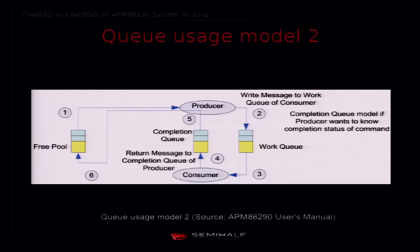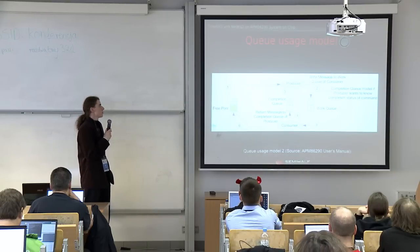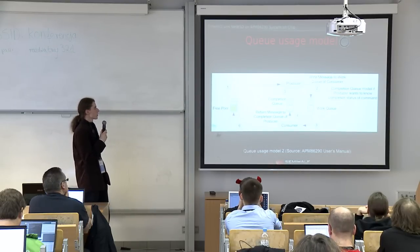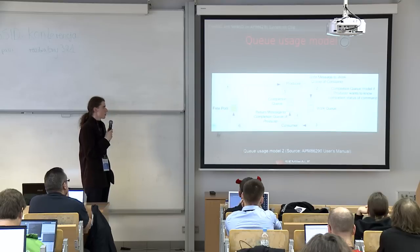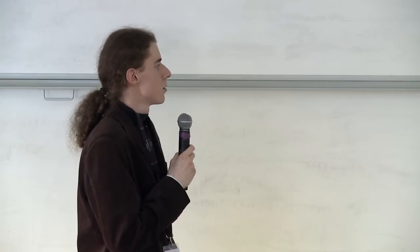The second model has an additional completion queue. The start is practically the same, but the only difference is that the consumer returns a message to the completion queue, so the producer may know that the command has finished and was executed. Then the free message goes back to the free pool.